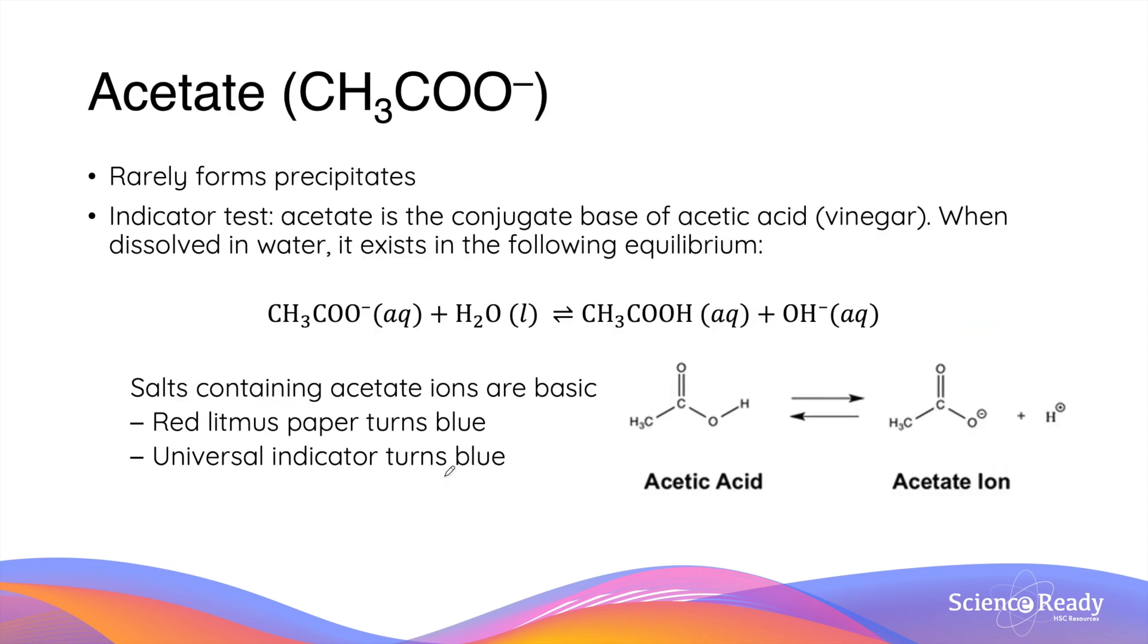Acetate ions rarely form precipitates, so this means it is very ineffective to use precipitation as a way to identify acetate ions. Acetate is a conjugate base of acetic acid, which is a weak acid. So when acetate ions dissolve in water, they form equilibrium with water, whereby they produce hydroxide ions. As such, we can confirm the presence of acetate by also using a form of indicator—red litmus paper or universal indicator—both of which will turn blue.